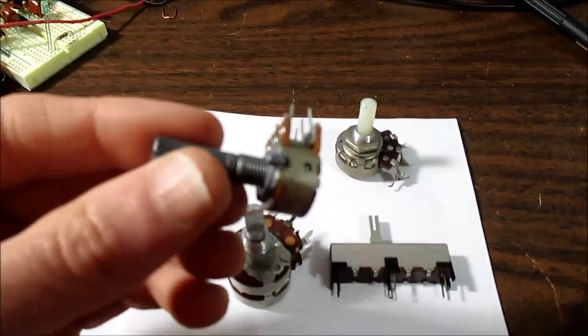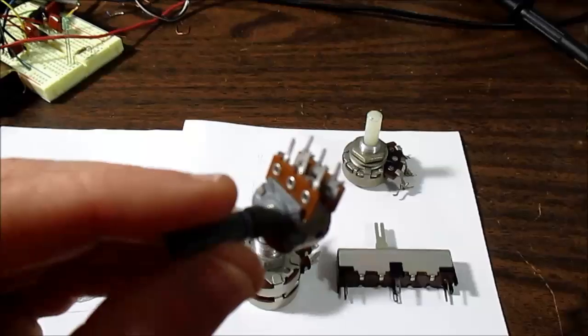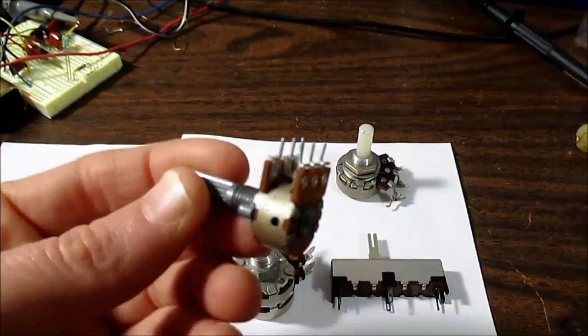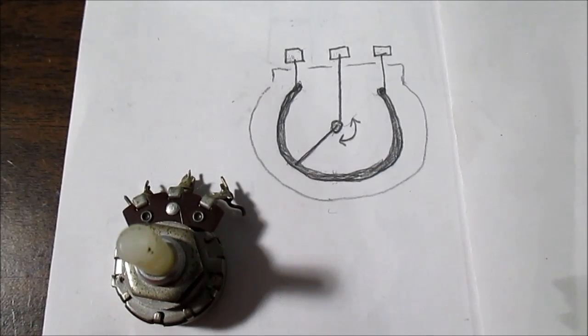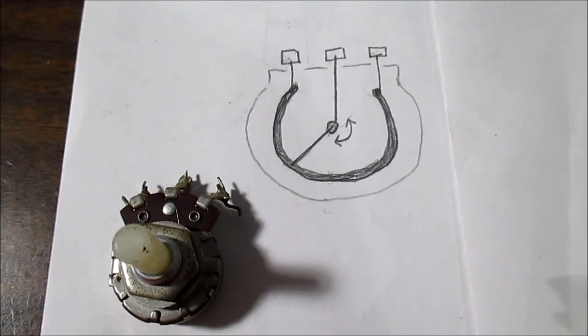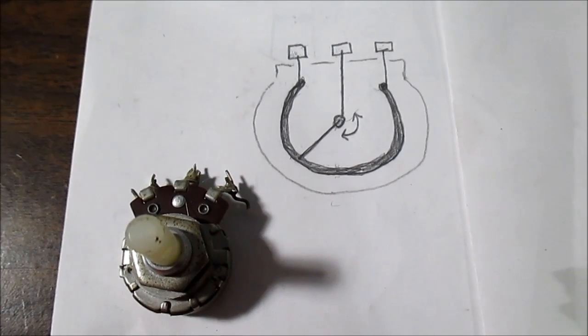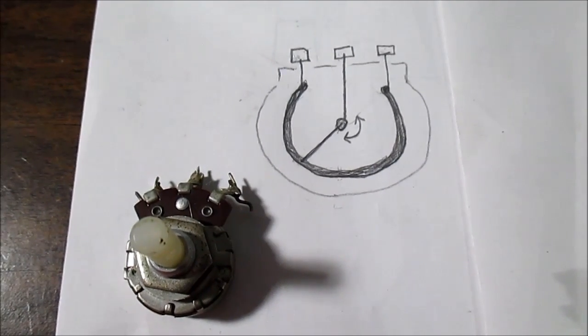This is the same thing but it's a smaller one for PC board mounting. Potentiometers come in various resistance and there's two common types: the linear type and the logarithmic or audio type.